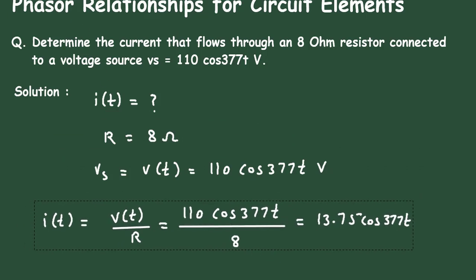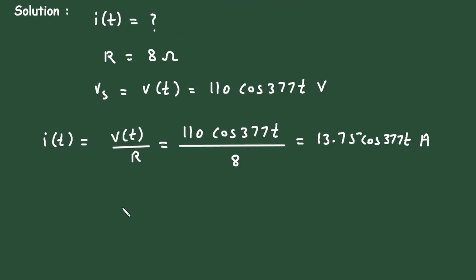Now, since it is current, its unit will be ampere. Therefore, I of T, that is current, is equal to 13.75 cos 377T ampere. This is the final answer for this problem.